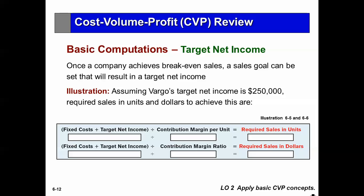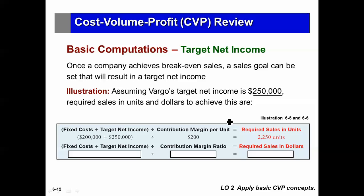Not only can I find break-even, I can figure out target net income by simply adding the net income to my fixed costs. If I want the number of units to achieve that target net income, I use the contribution margin per unit and get my answer in units. If I want my answer in sales dollars, I add the target net income to the fixed cost and divide by the contribution margin ratio — giving me the required total sales to achieve target net income of $250,000. That's how we use it.